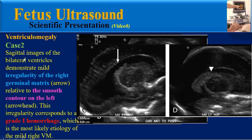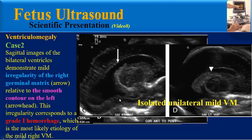A coronal image from the same patient confirms asymmetric dilation of the right ventricle relative to the left, with a normal cavum septum pellucidum visualized in the midline. Sagittal images of the bilateral ventricles demonstrate mild irregularity of the right germinal matrix relative to the smooth contour of the left, corresponding to grade 1 hemorrhage, which is the most likely etiology of the mild right ventriculomegaly.